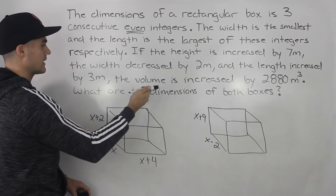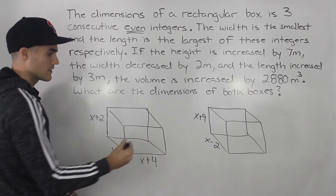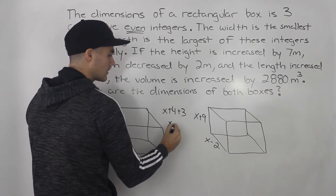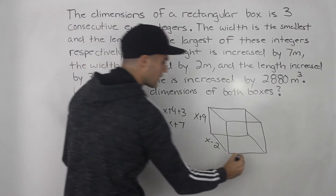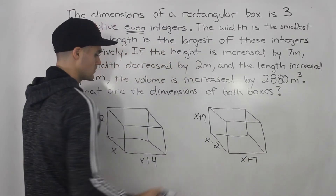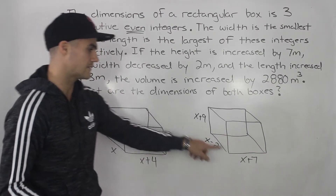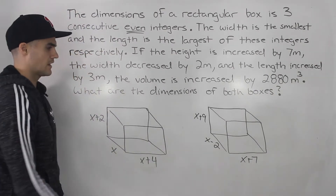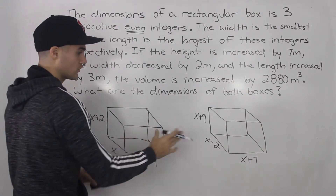The length is increased by three meters. The current length is x plus 4, so adding three gives us a new length expression of x plus 7. So we have the old box and now the new box — the height and length increase, and the width decreases. Now that we have the dimensions of both boxes, let's create expressions for the volume of each.